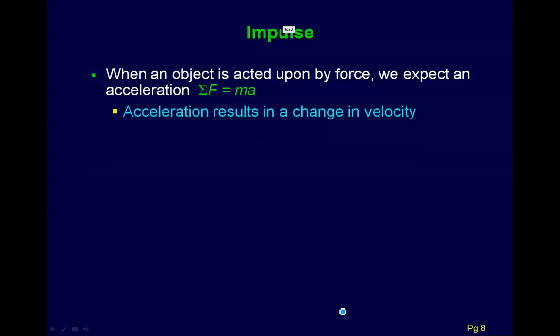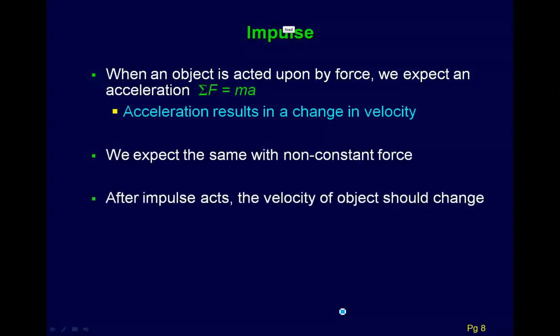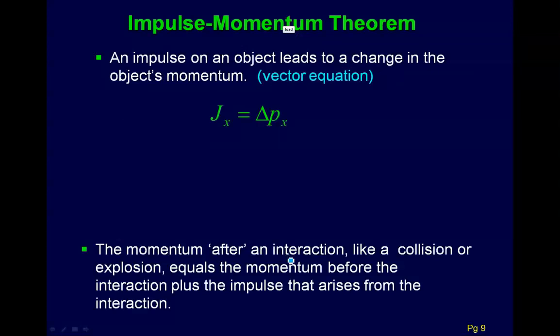Now if we think about this a little bit, when an object is acted upon by a force, we expect an acceleration. That's what Newton's Second Law tells us, F equals ma. This acceleration results in a change in velocity. But we expect the same with a non-constant force. And so after an impulse acts, the velocity of the object should change. And so if we look at our new equation, we'll write this in the x direction. And then we'll write over here just as the impulse. So when an impulse acts, and remember the impulse is essentially a force - if there's no force, the impulse is zero. So when an impulse acts, what does that do? Well, it changes the velocity. The velocity will have to change. And so this is just a rewriting of Newton's Second Law. There's really nothing new here. It's just a new way, sort of a new vantage point to look at it.